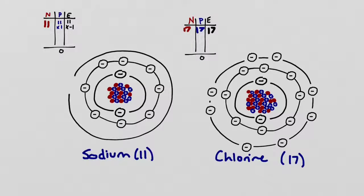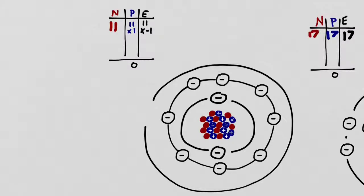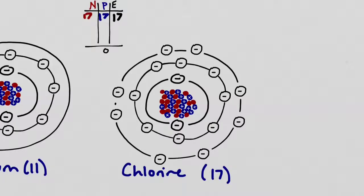Let's tally up. The sodium atom now still has the same number of neutrons and protons, but is missing one electron — it now has only 10 electrons, each with a charge of minus one. That means it has more positive charges than negative charges, giving it a final charge of positive one. Over on the chlorine atom, you now have an extra electron: 18 negative-one charges and only 17 positive charges, giving chlorine an overall charge of minus one.